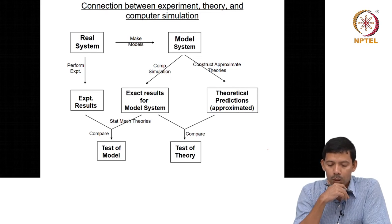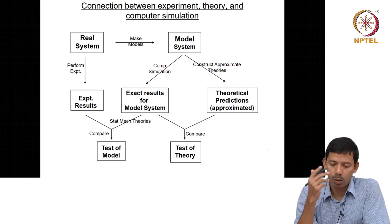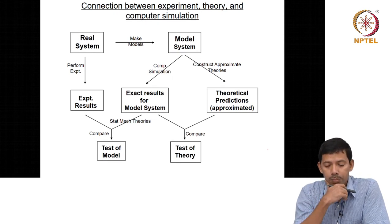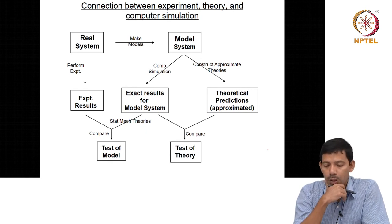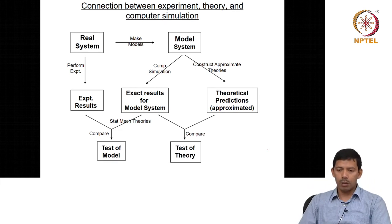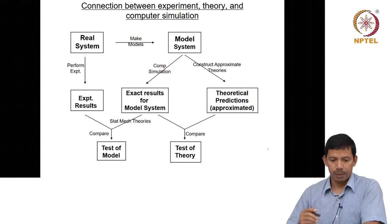How can we make a connection when we do a computer simulation? How can we make a connection of the simulation results? How do we trust the simulation results? This is the link that a computer simulator makes with the experimental data.